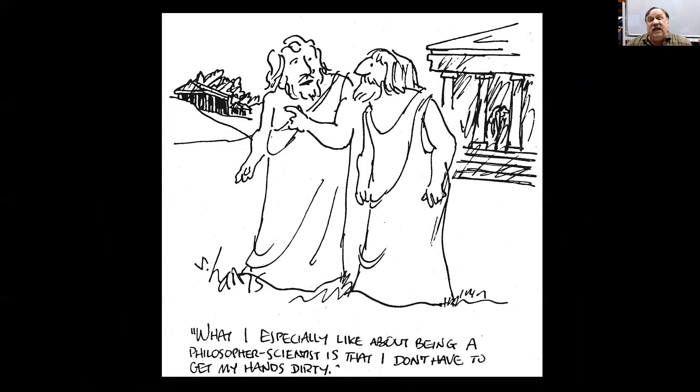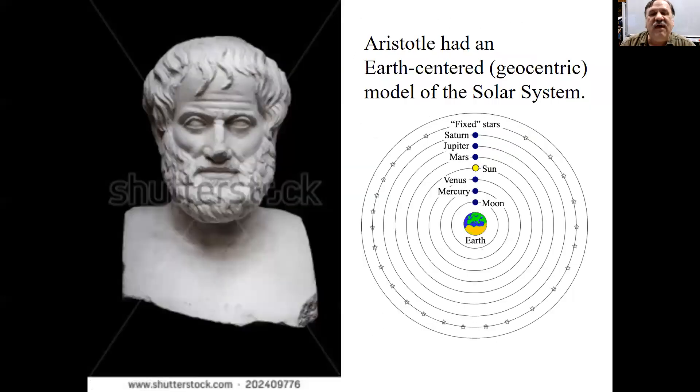The ancient Greeks had what is essentially recognizable today as a class prejudice. They looked down on people who worked with their hands. Therefore, they were very good mathematicians. And their philosophy came to the beginning of science, but it really didn't get very far. They didn't really invent modern science. They had this hang-up of testing ideas by experiment. What I especially like about being a philosopher scientist is not having to get my hands dirty.